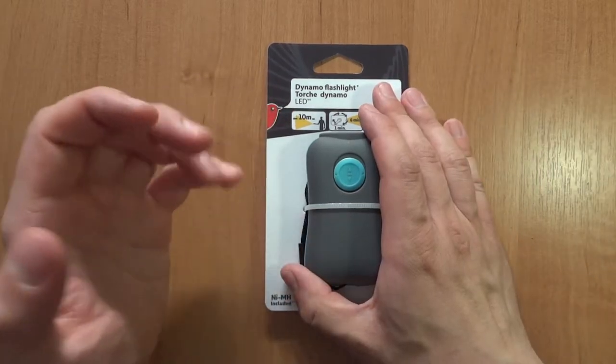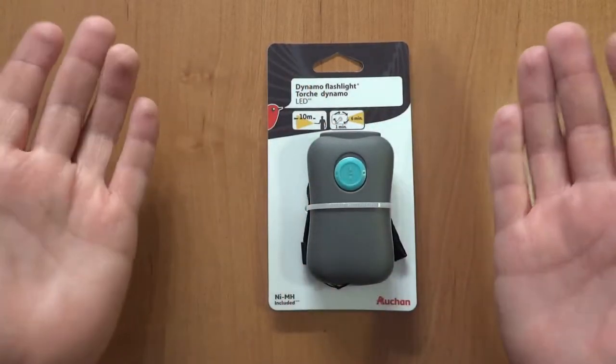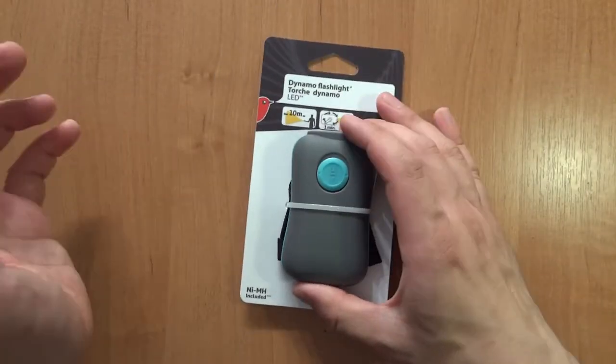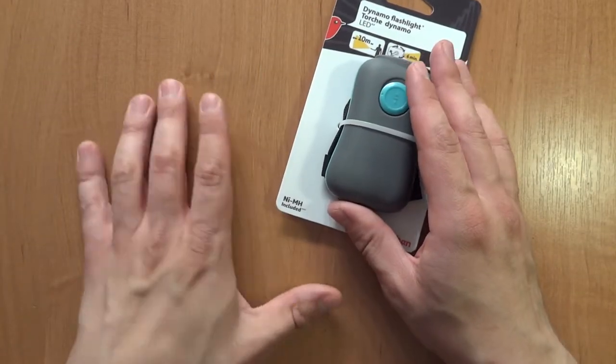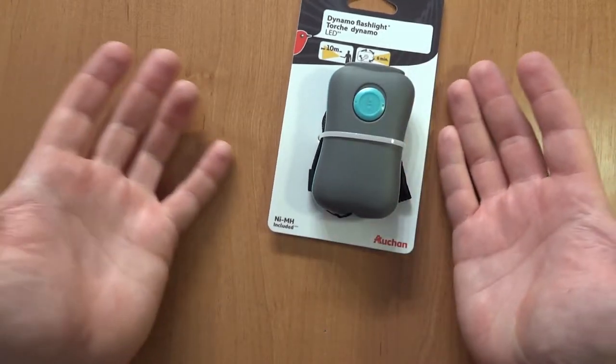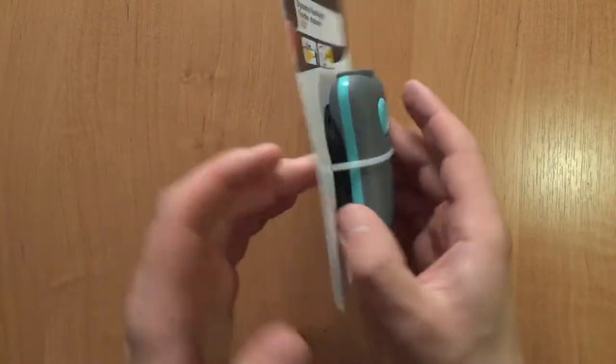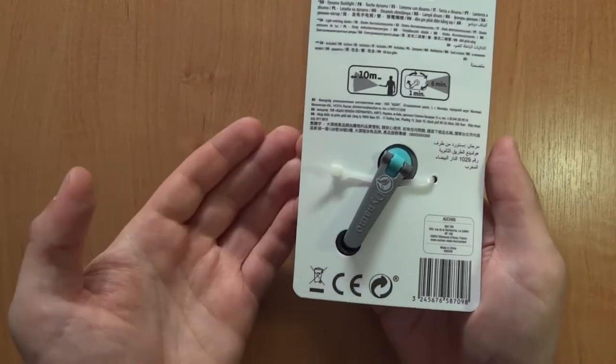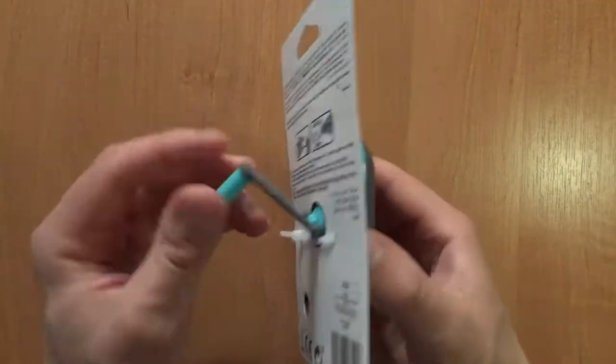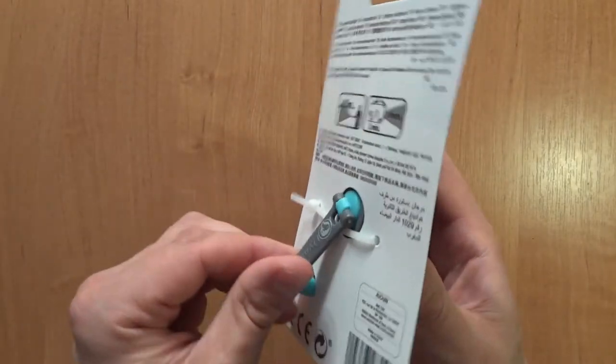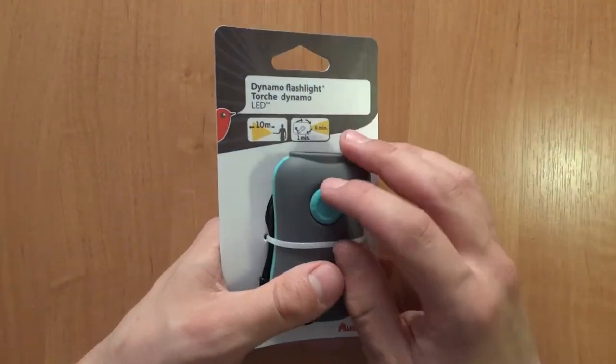Hello and welcome. Today I'll be taking a look at this dynamo flashlight. It was sub two dollars, so I'm just curious. It piqued my interest because it does say that it has nickel metal hydride batteries included. So the idea is basically that you turn this knob here and it'll charge it.